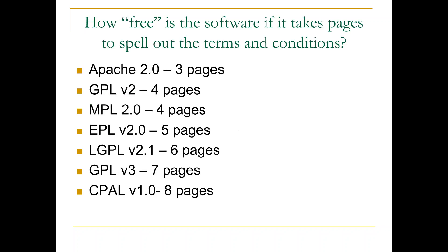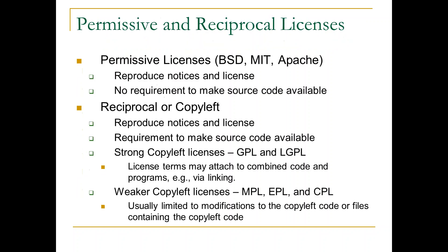I went to the OSI site and looked at a number of commonly used open source licenses and hit print to see how many pages they would come out to. The point isn't how long or short they are — but if it really meant free as in previous, it wouldn't take this many pages to say that. There really are lots of terms and conditions in many of these agreements that are important to understand. We need to look at the different kinds of licenses and the different kinds of terms and conditions they impose to understand the interplay between these licensing requirements and the FRAND licensing commitments undertaken in connection with standards development.